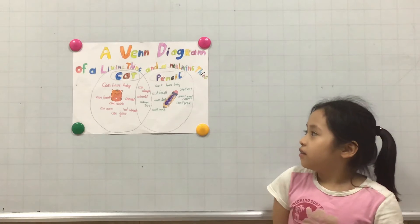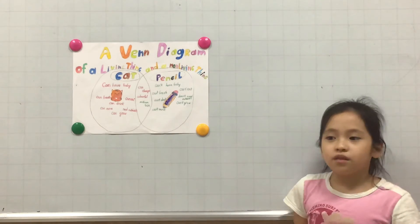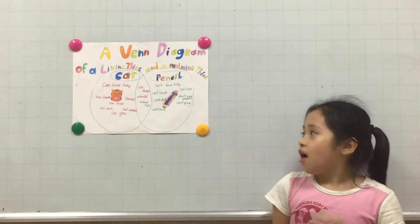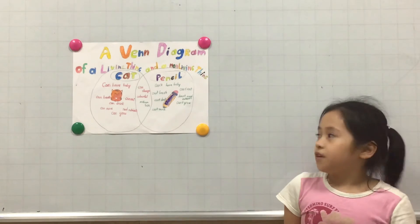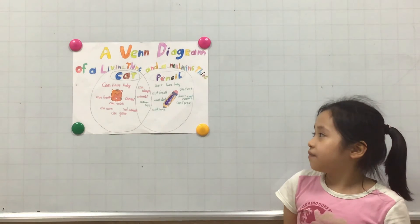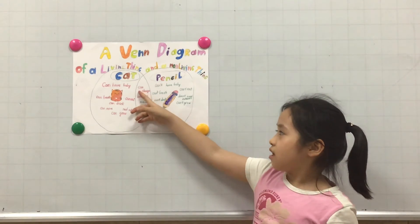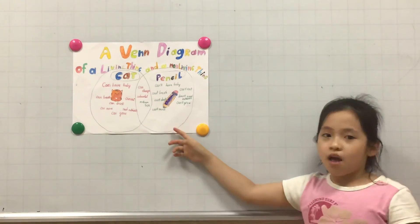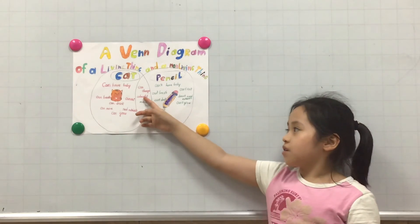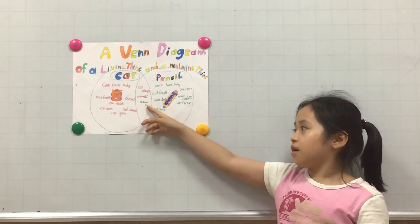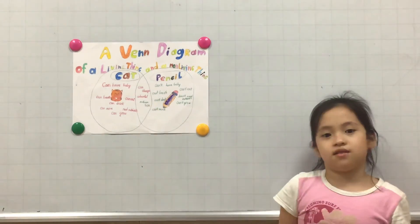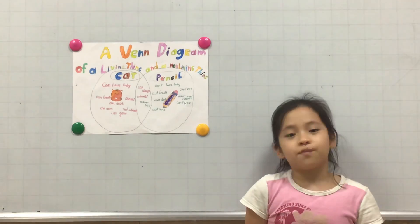Second, now I will tell you about the similarities. They have some similar traits. The first similarity is both can change. Both are colorful and they are both medium size. That is the end of my presentation.